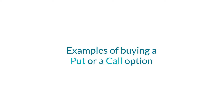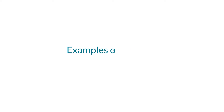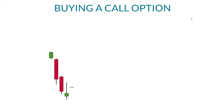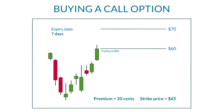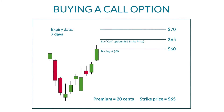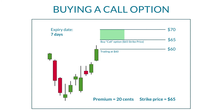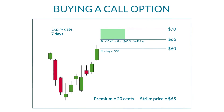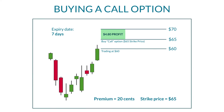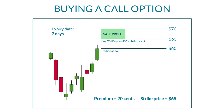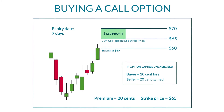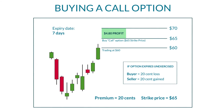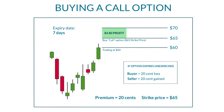Now let's take a quick look at an example of buying a call option. If a stock is trading at $60 and you think it's going to go up to $70, you might buy a $65 call option for 20 cents. If the stock rose to $70, that would allow you to buy the stock at $65 even though it's valued at $70, netting you a profit of $4.80 on each share. If the stock never rises above $65 by the expiry date, the call expires worthless. The call buyer makes a loss of 20 cents, while the call seller keeps the 20 cents.